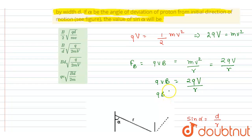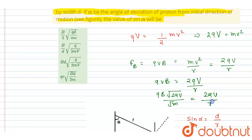Substituting v = √(2qV/m) into qvB = mv²/r, we can simplify to find r. Putting in the value of v under the root of 2qV divided by m, from this we can write r equals...